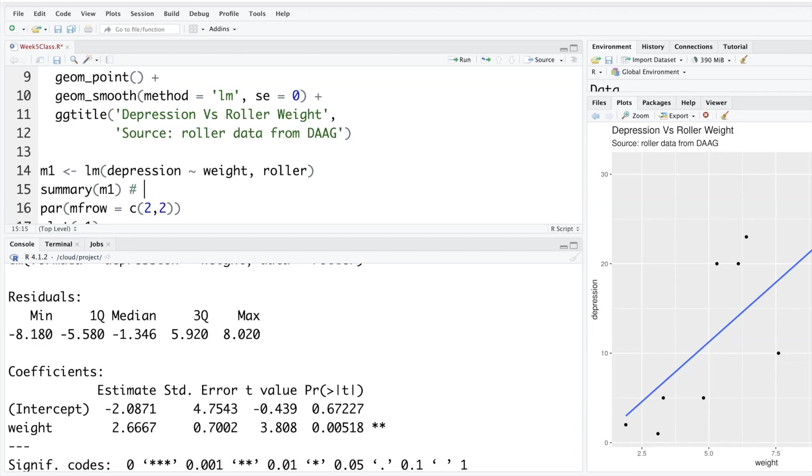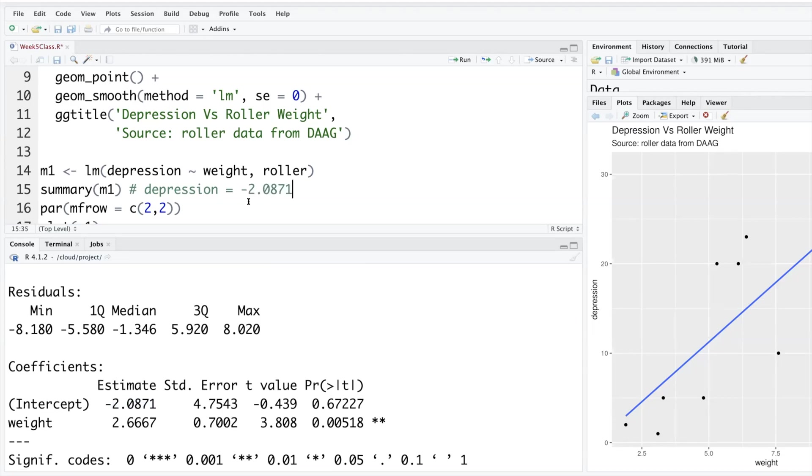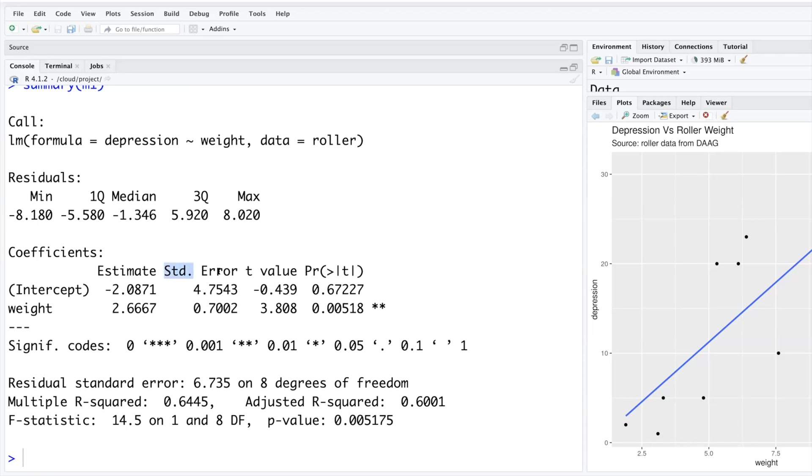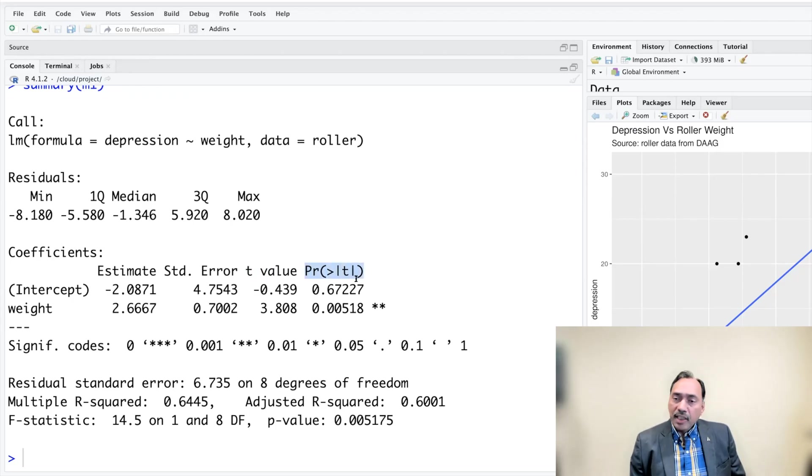Based on this summary, the way our equation is going to look like is estimate of depression equals B0, which is the intercept, negative 2.0871 plus slope times weight. There is a standard error, t-value, and then probability based on t-distribution.